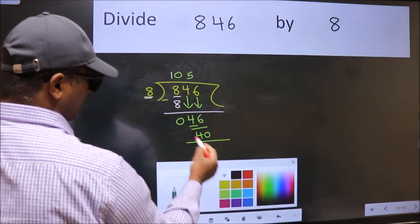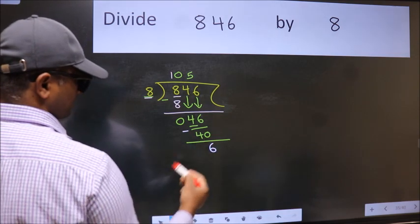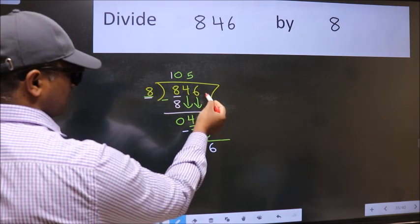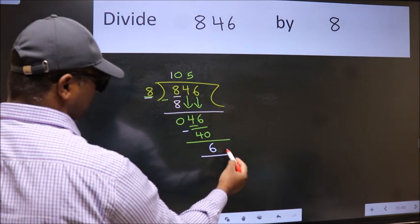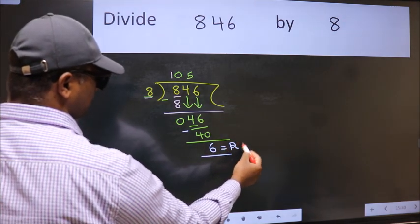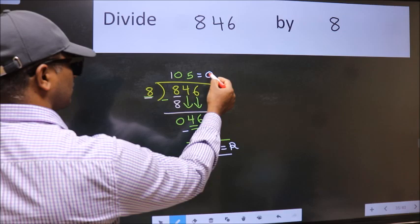Now we subtract. We get 6. No more numbers to bring it down, so we stop here. This is our remainder and this is our quotient.